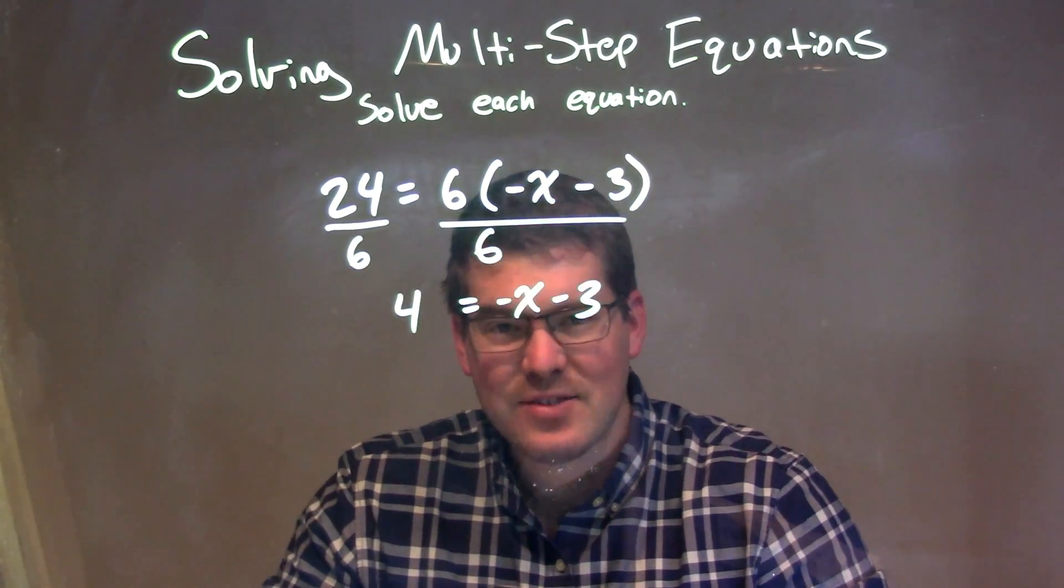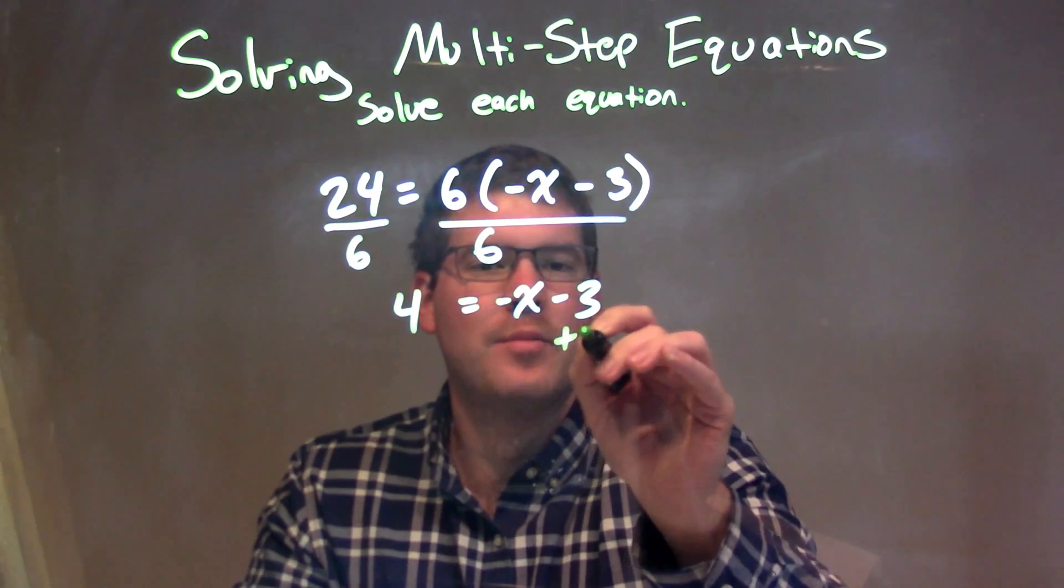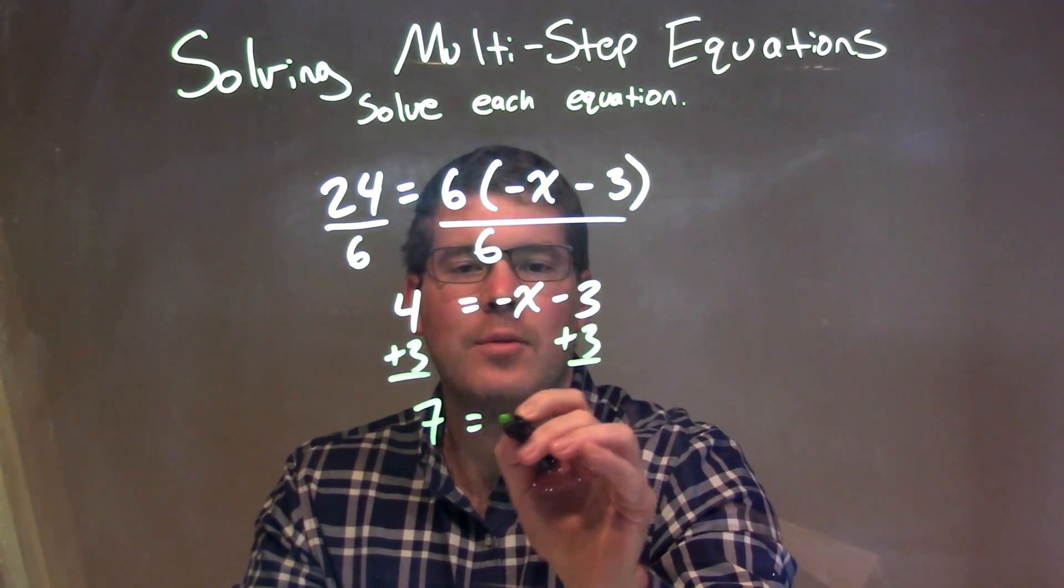So, now I just want to solve for x. I'm simplifying here, so I'm just going to add 3 to both sides. So, we have a positive 7 equals a negative x.